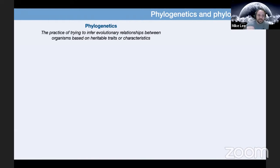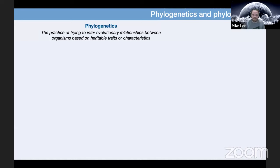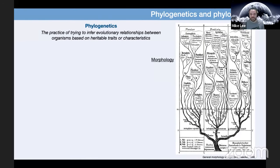Phylogenetics is the practice of trying to infer evolutionary relationships between organisms based on heritable traits or characteristics. As covered in the week one seminar, this isn't limited to sequencing data and traditionally was done based on morphology — how things looked. This figure is generally cited as the first phylogenetic tree that tried to capture all known organisms, published in a book by Ernst Haeckel in 1866, the same book in which Haeckel introduced the term phylogeny.